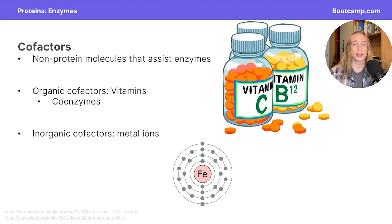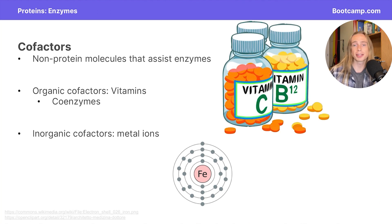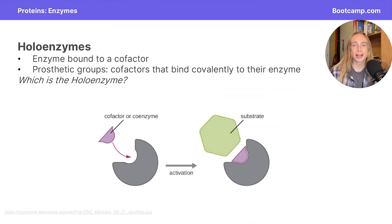There are two different types of cofactors: organic cofactors, which are made up of carbon and are also known as coenzymes — typically vitamins like biotin, vitamin B12, or vitamin C — and inorganic cofactors, which are typically metals like potassium, magnesium, or iron. Holoenzymes are enzymes that are bound to a cofactor. When a cofactor is covalently bonded to an enzyme, we call this a prosthetic group, and these prosthetic groups are really tightly bound onto the enzyme.